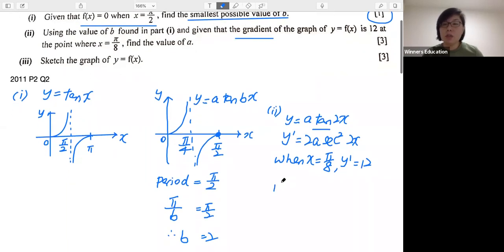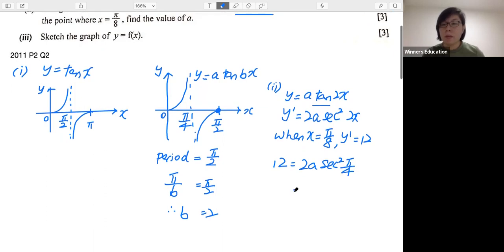So with that, I can actually put this information into over here, the equation that we have found. So 12 equals 2a sec²(2x). So 2 times π/8 will give me π/4.